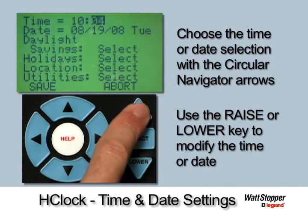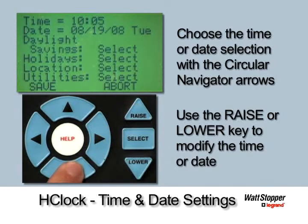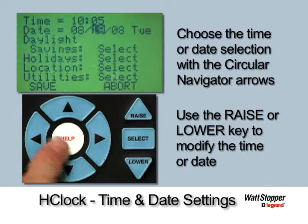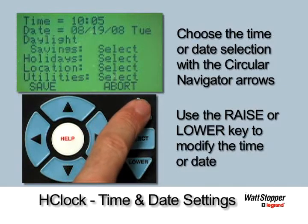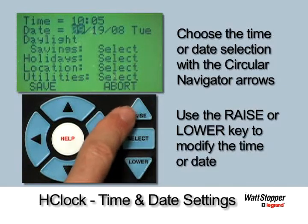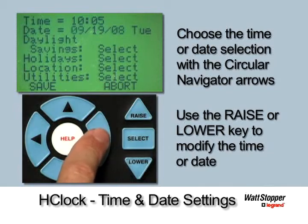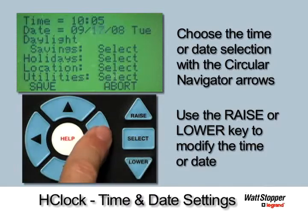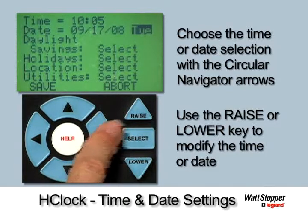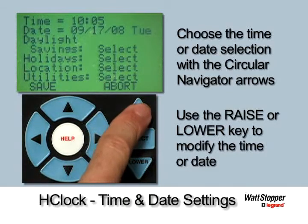Adjust the minute again using the raise and lower keys. Follow a comparable procedure to set the current date, starting with the month, then the date, the year if necessary, followed by the day of the week. The H-Clock is now governed by these settings.